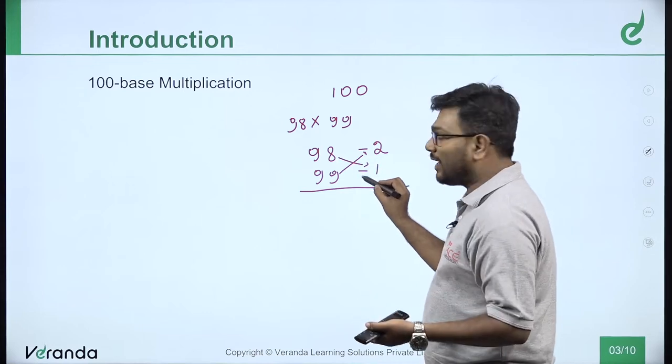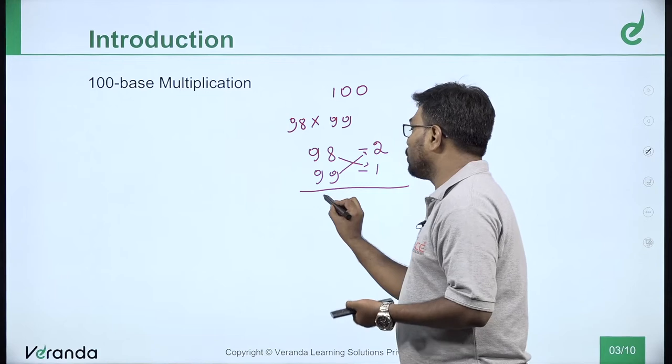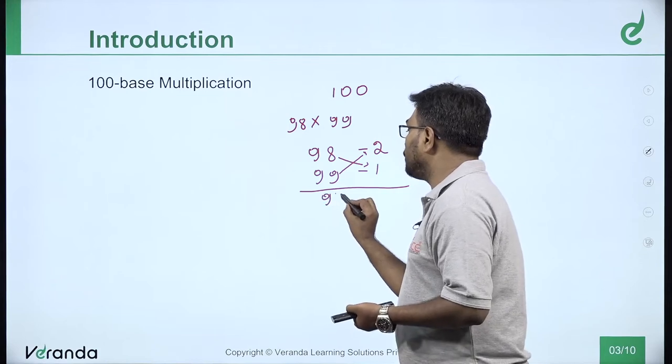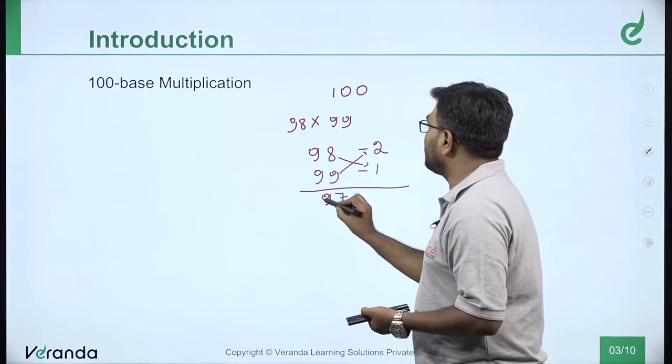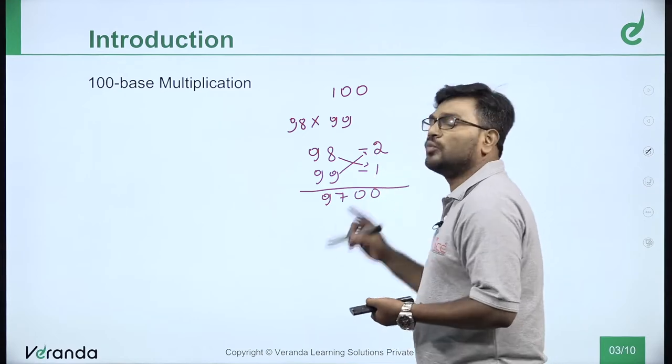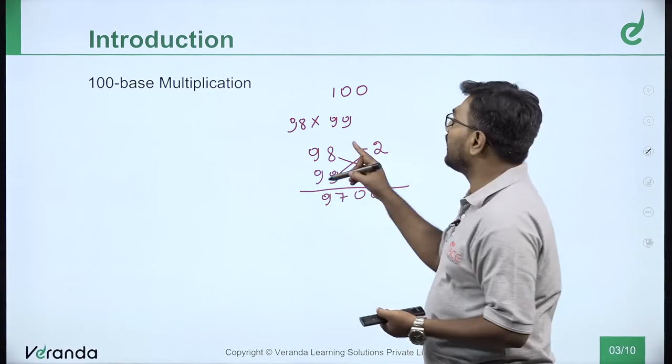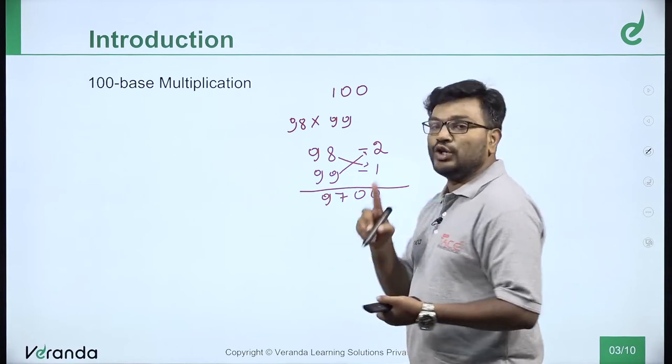Either 98 minus 1 or 99 minus 2 - both give 97. 97 into the base, 97 into 100 equals 9700. This is the first step.